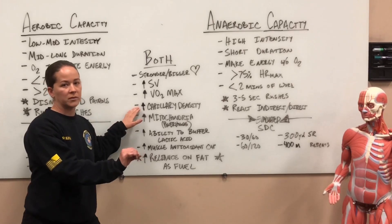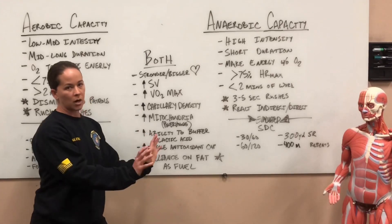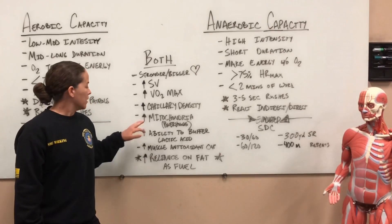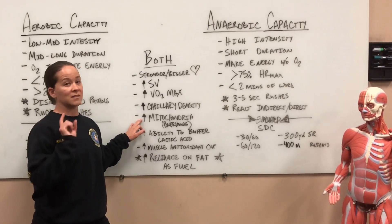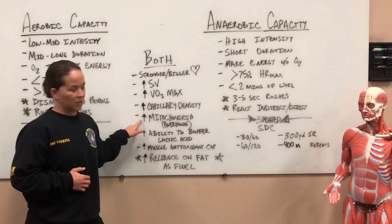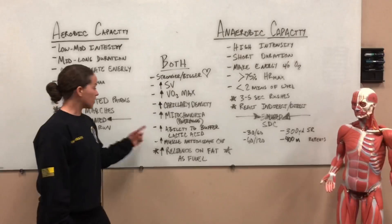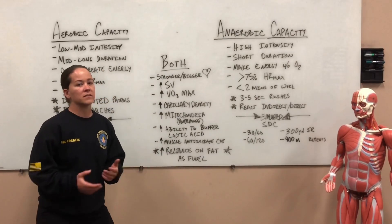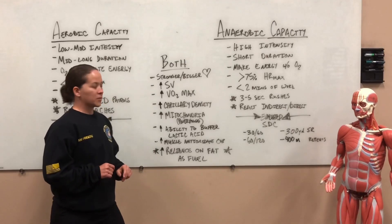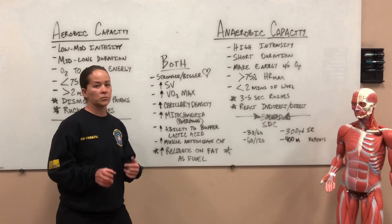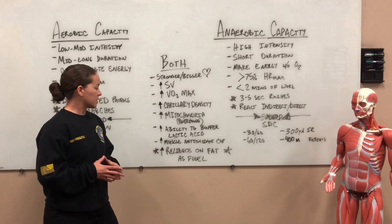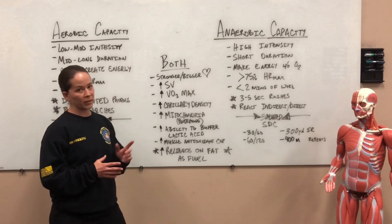Inside the muscles, we have an increase in capillary density — capillaries are smaller blood vessels that carry oxygenated blood to the muscles. We also see an increase in mitochondria — the powerhouse of the cell — not only in number but also in size, so we're creating energy most efficiently. Additionally, there are increases in our ability to buffer lactic acid, meaning we create less of it and our bodies become more efficient at removing it, along with increased muscle antioxidant capacity to clear out waste products produced during physical activity.